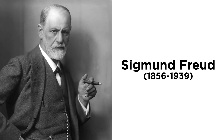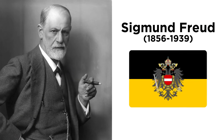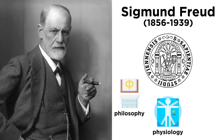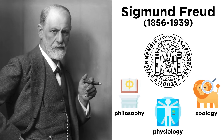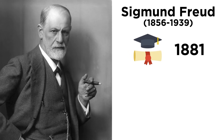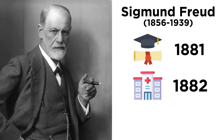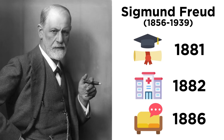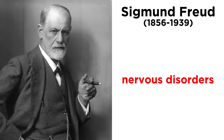Sigmund Freud was born in 1856 in the Austrian Empire. He went to the University of Vienna, where he studied philosophy, physiology, and zoology. He did a lot of work while at school on the biology of nervous tissue in humans and other animals, and his research paved the way for the discovery of the neuron. Freud became a doctor in 1881 and began his medical career at the Vienna General Hospital in 1882. In 1886, Freud started a private practice specializing in what was known at the time as nervous disorders.